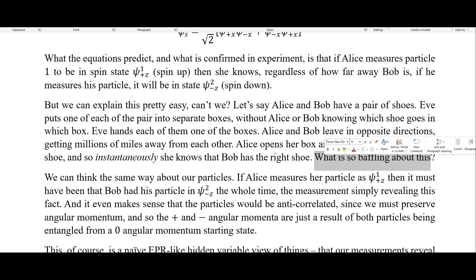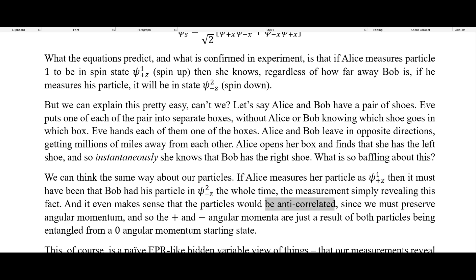So what is so baffling about this? I mean, this seems pretty mundane. And we could think of it the same way with our particles. So if Alice measures her particle in the up direction, then it must have been that Bob had his particle in the down direction the whole time, his measurement simply revealing this fact. And it even makes sense that the particles would be anti-correlated — meaning that one is spin up, the other has to be spin down and vice versa.